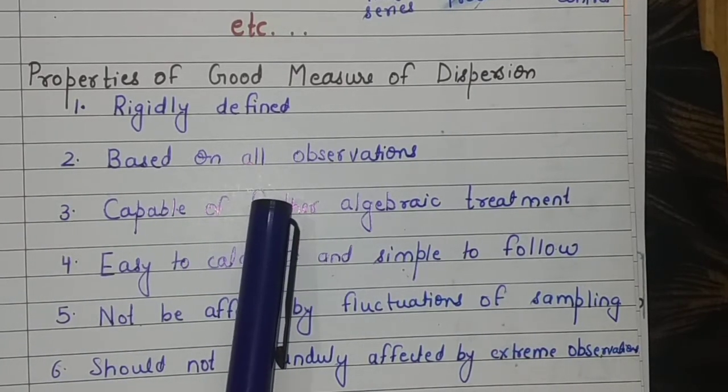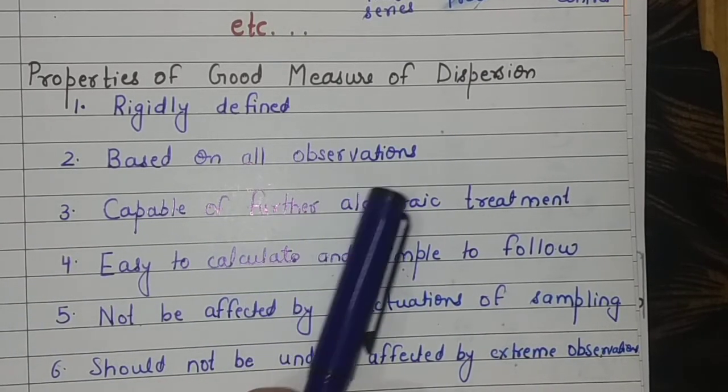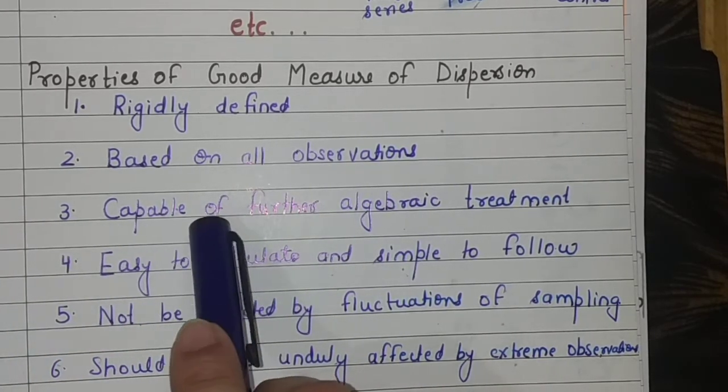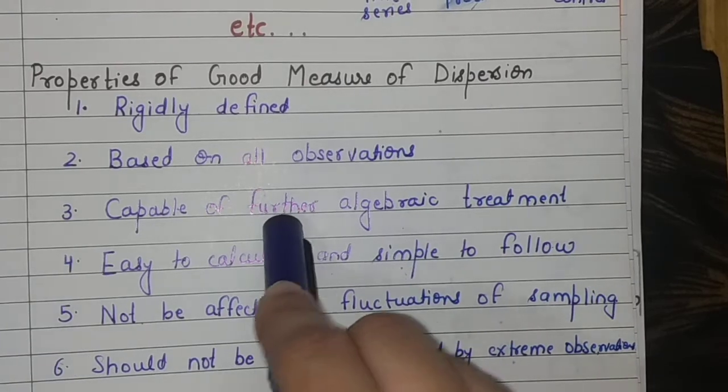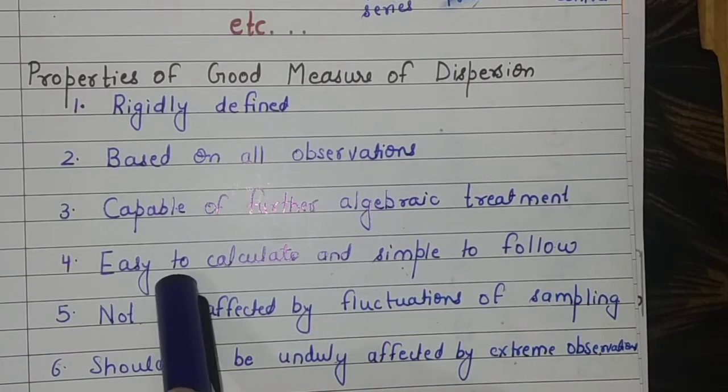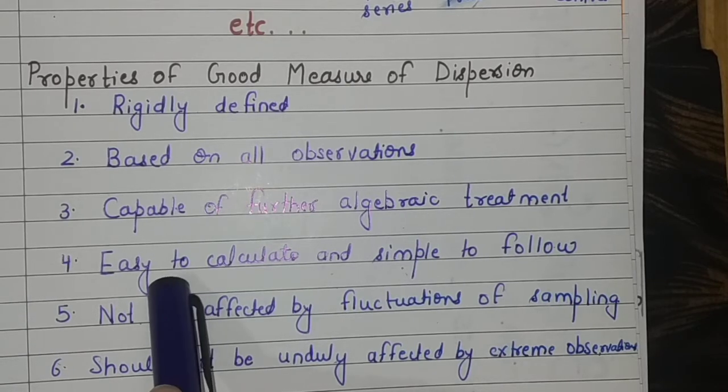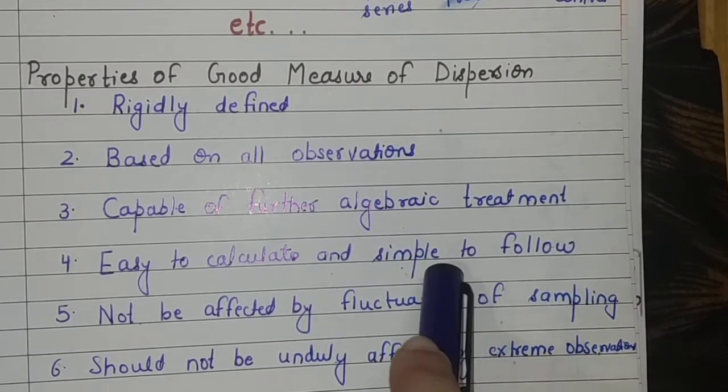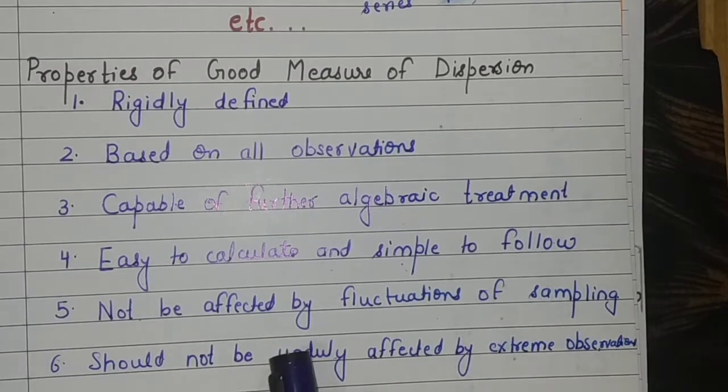Number two, a measure of dispersion is considered good when it is based on all the observations. Number three, your measure of dispersion is good when it is capable of further algebraic treatment. Number four, your measure of dispersion is good when it is easy to calculate and simple to follow.